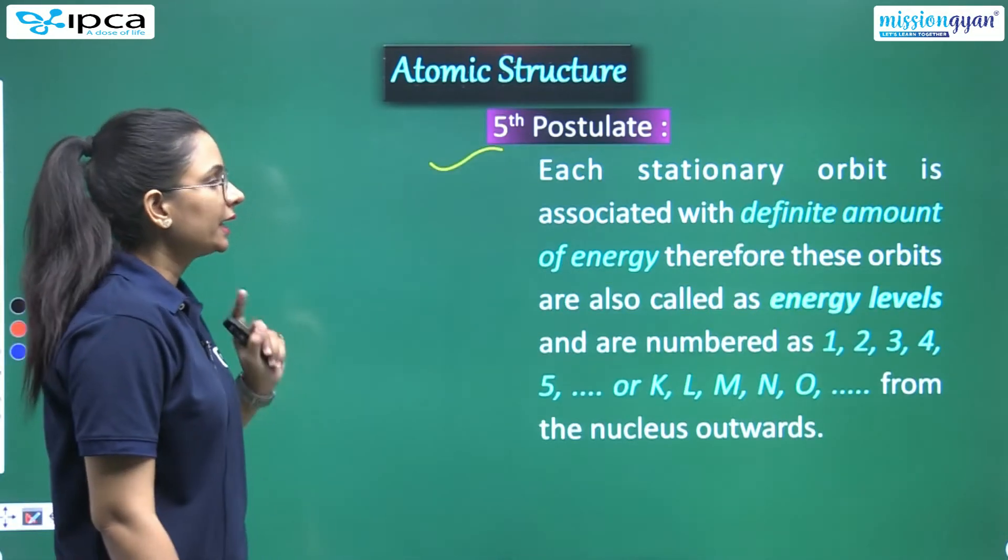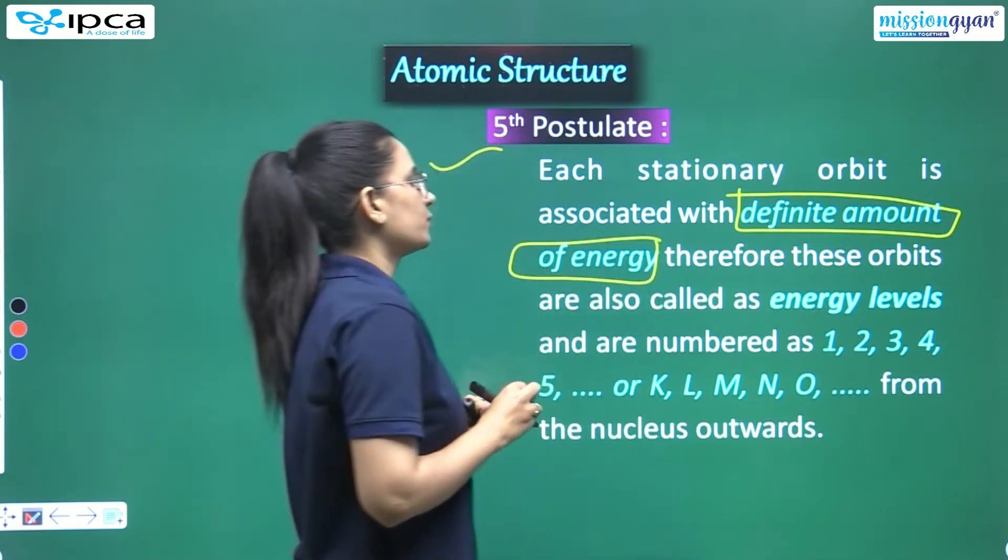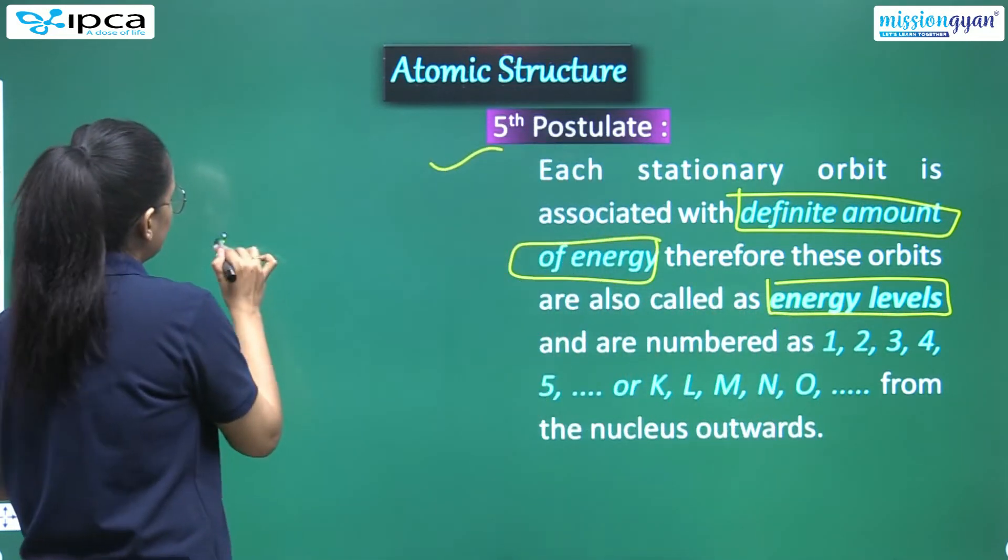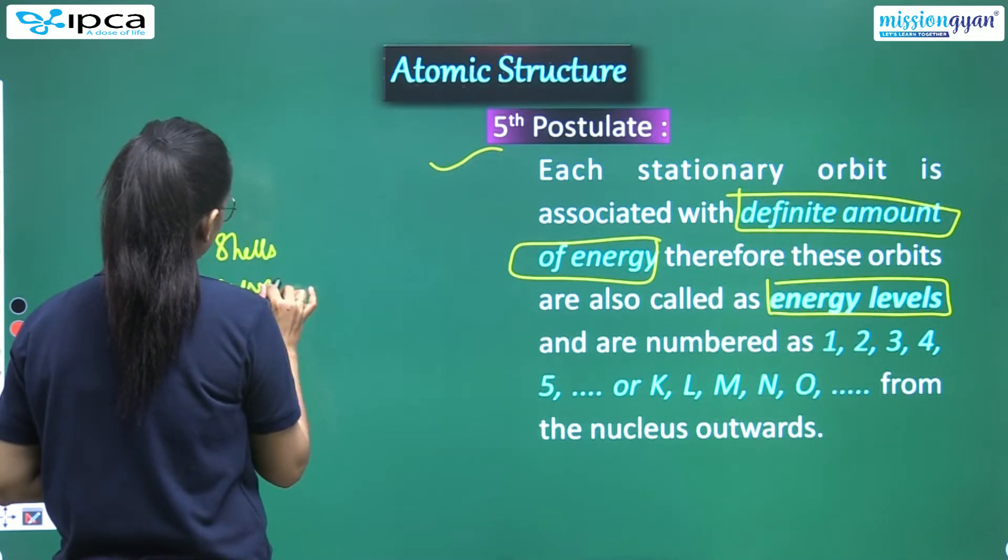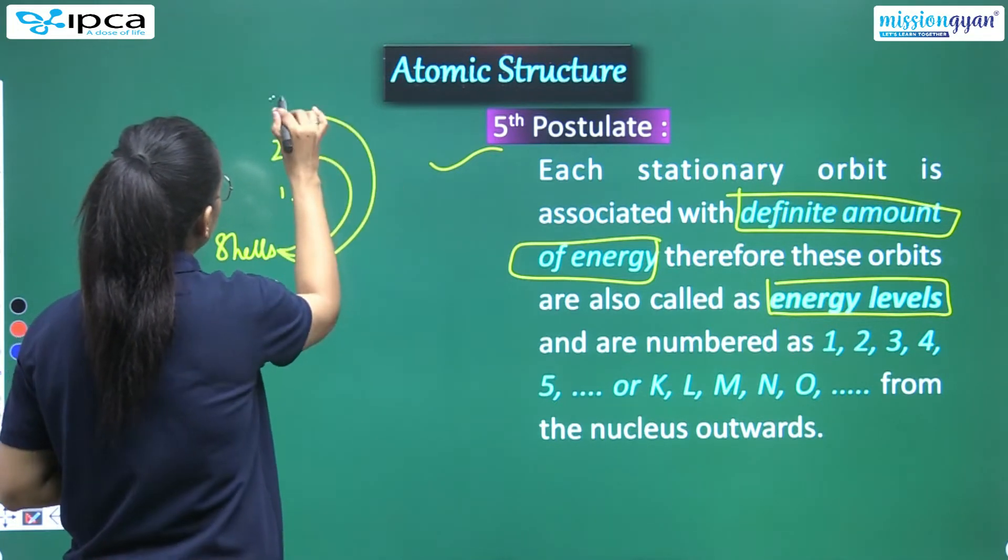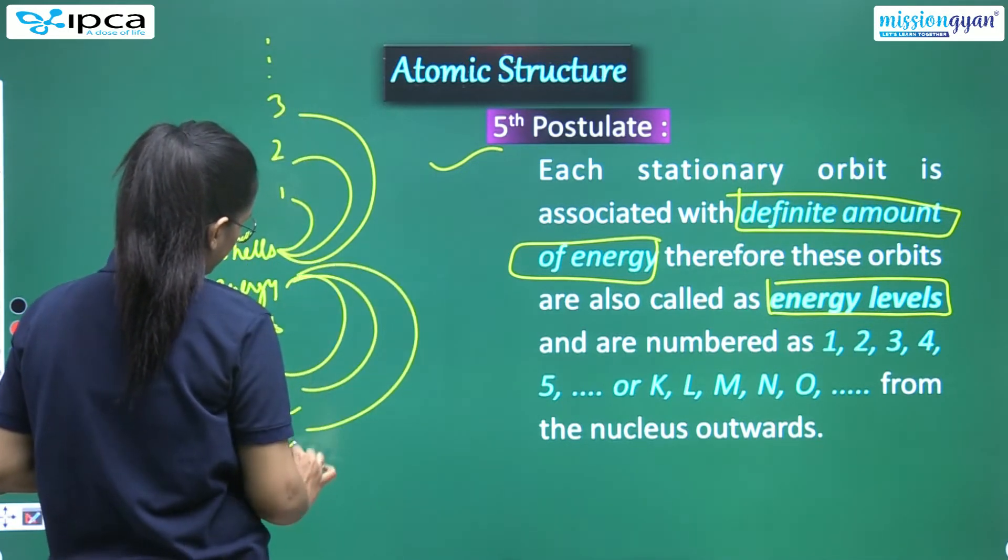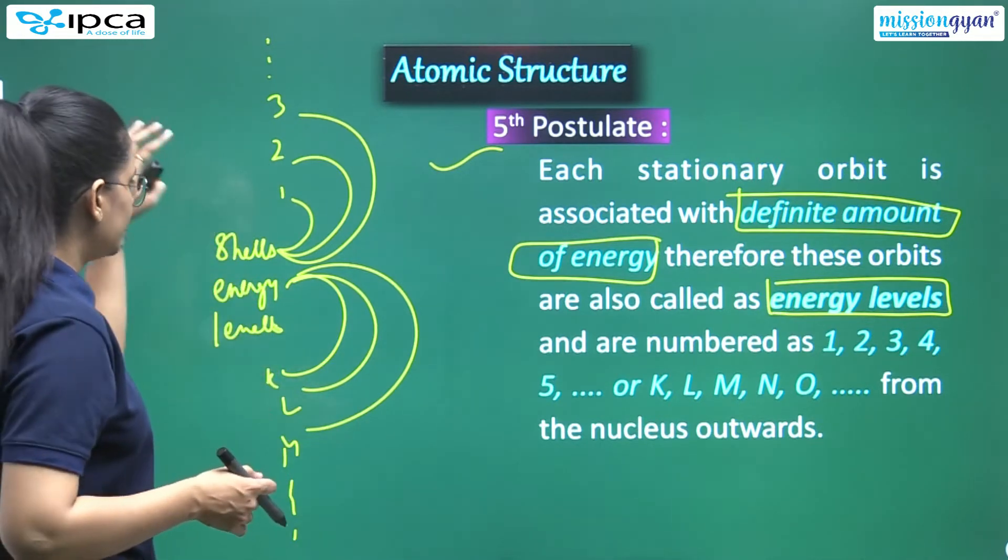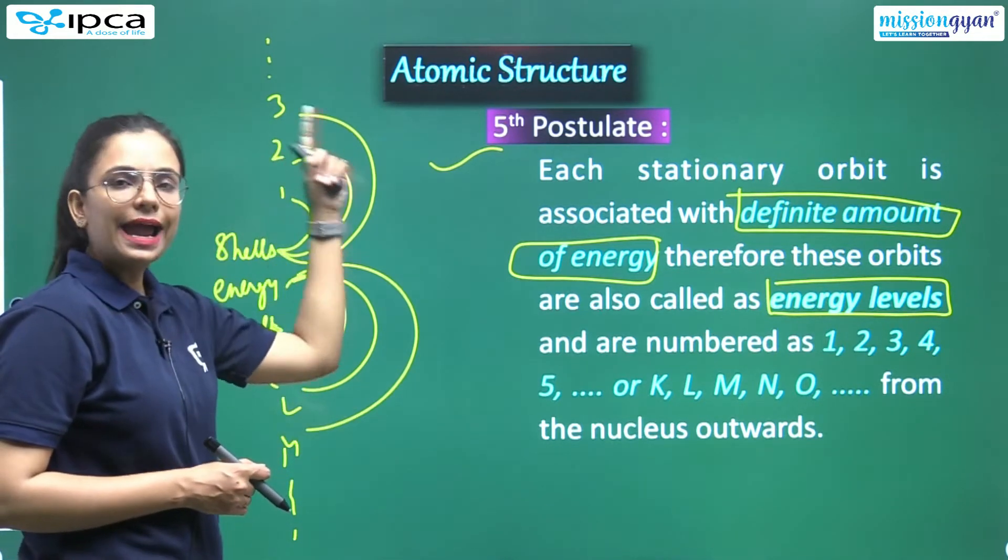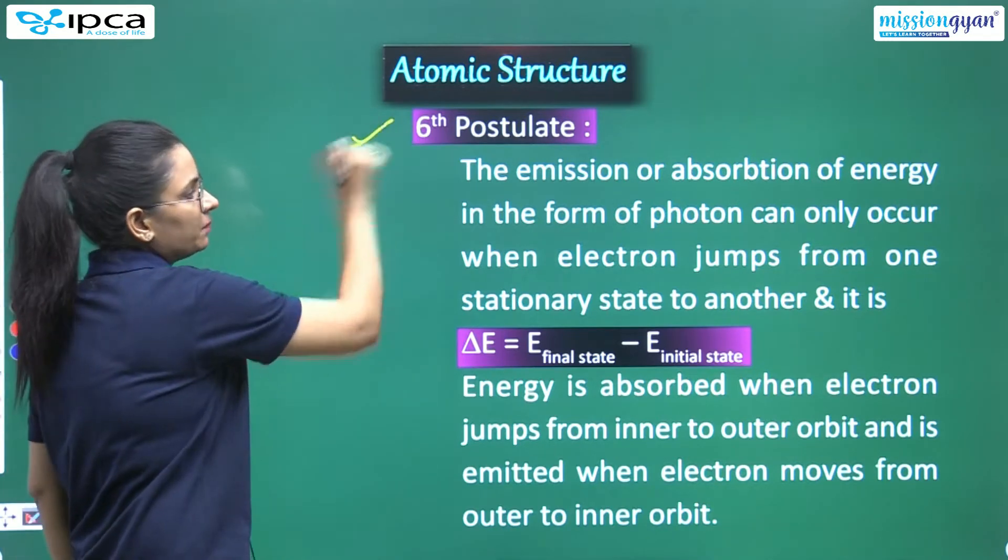The next postulate - what does it say? Each stationary orbit is associated with definite amount of energy. Therefore, these orbits are also called energy levels. So these orbits - whether you call them shells, energy levels, whatever you call them - you can represent them as one, two, three and so on. And here you call them K, L, M and so on. This is how you represent them. These stationary orbits are called energy levels, numbered as 1, 2, 3, 4, 5 and so on, and in alphabets they are K, L, M, N, O away from nucleus.